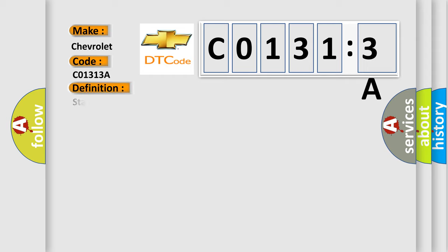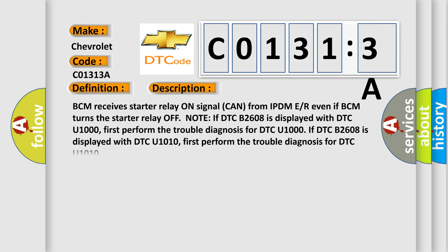The basic definition is: BCM receives starter relay on signal CAN from IPDM even if BCM turns the starter relay off.